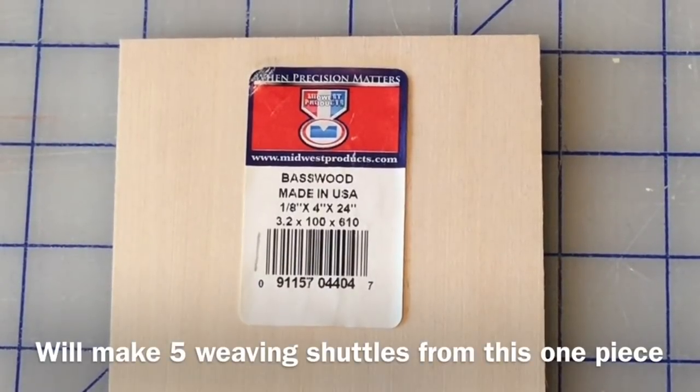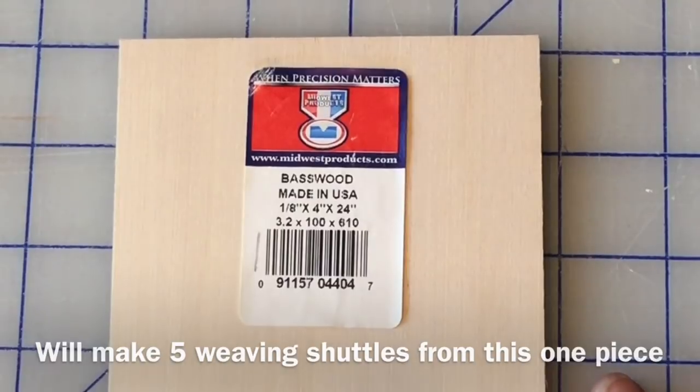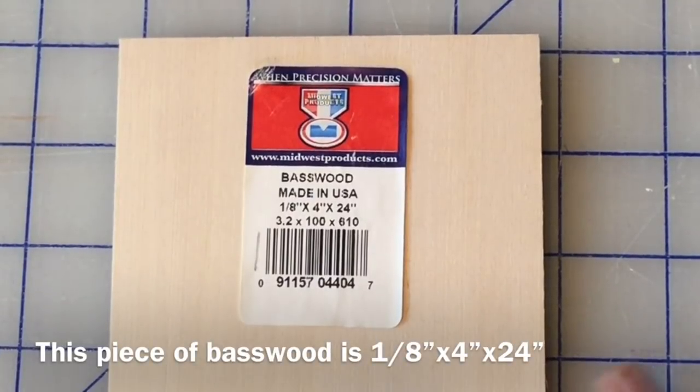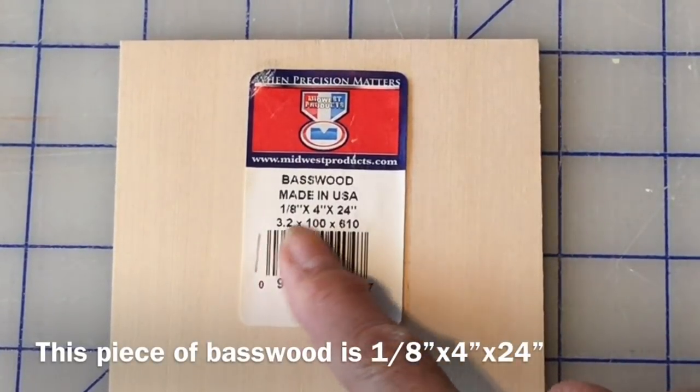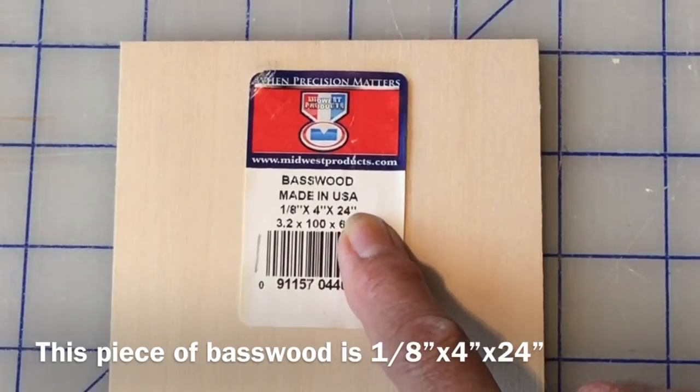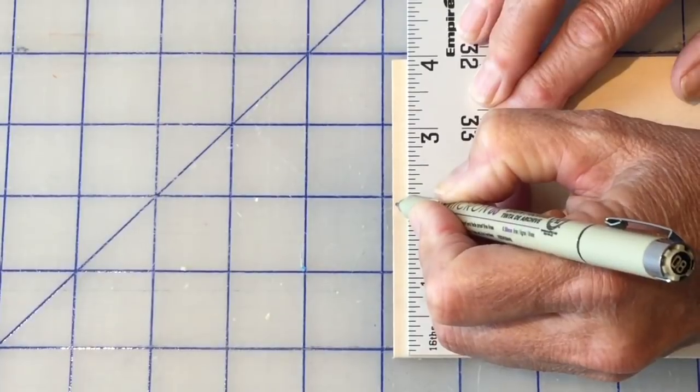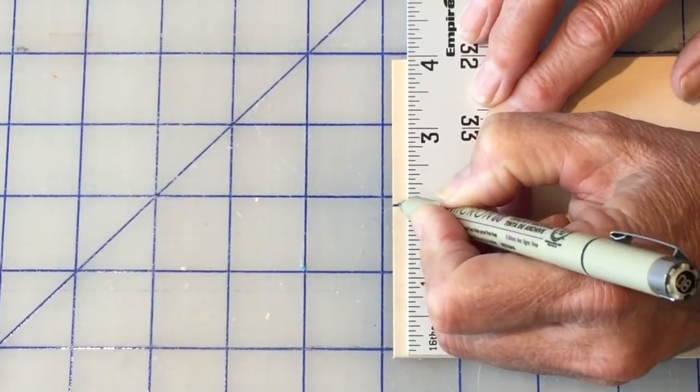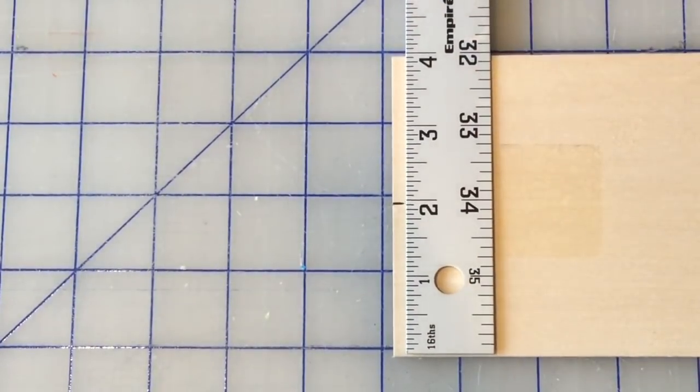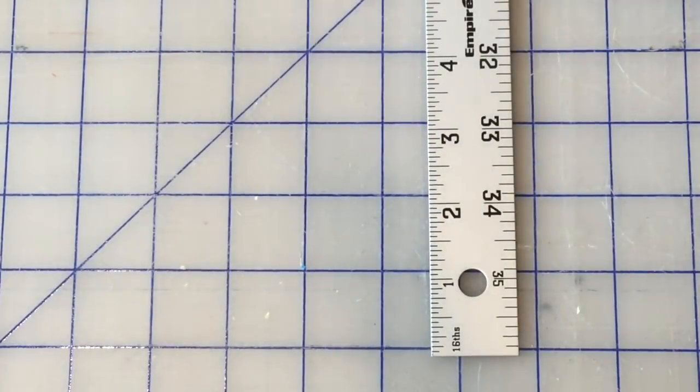Now for my weaving shuttles. Again I'm going to be using the basswood. And this time I'm cutting a one-eighth by four inches by 24 inches. And I'm going to cut this in half. So again we'll mark off our two inch mark, because this is a four inch wide piece of basswood. Mark on both ends.